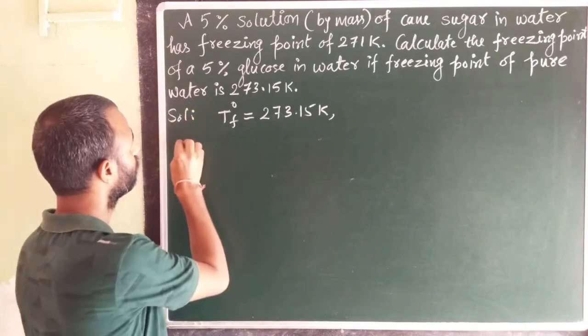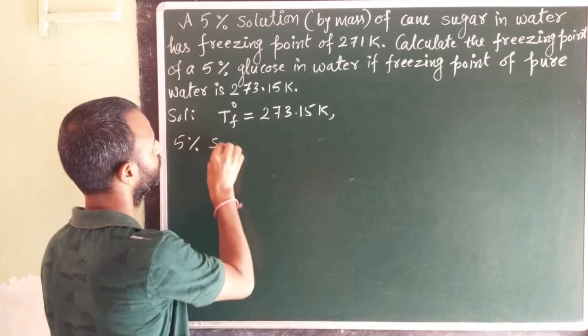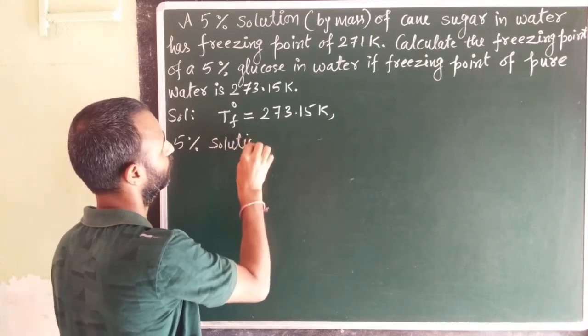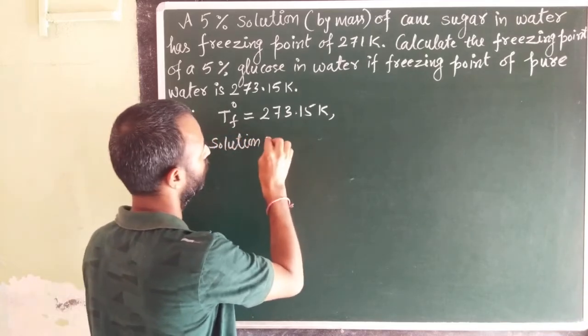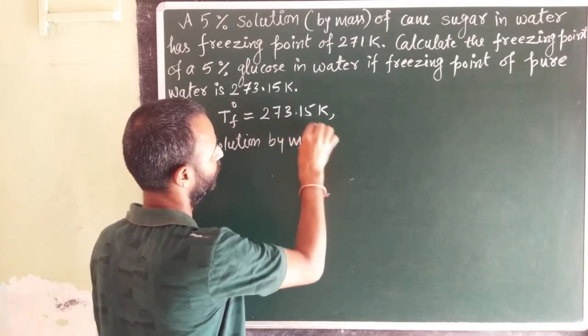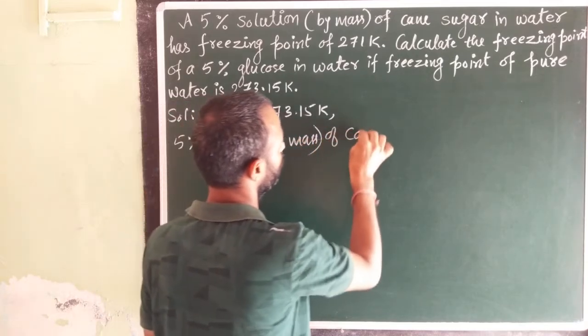Then 5% solution by mass of cane sugar means what?